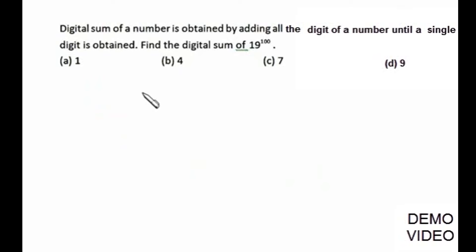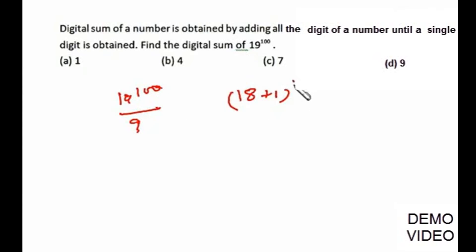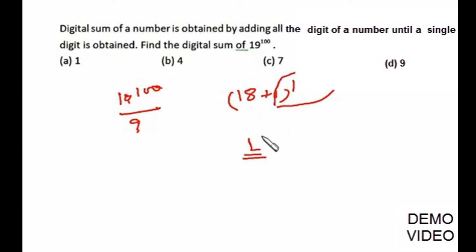The digital sum of 19 raised to 100 is the remainder when 19^100 is divided by 9. Write 19 as 18+1, so we have (18+1)^100. When divided by 9, every term in the expansion contains 18 and is divisible by 9, except the last term 1^100 = 1. So the remainder is 1, and therefore the digital sum of 19^100 is 1.